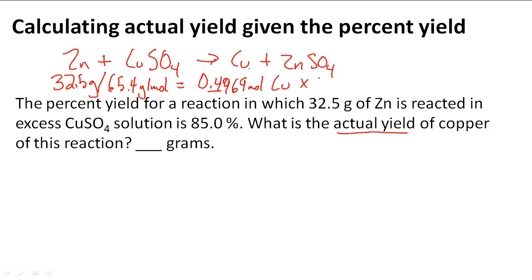To get grams of Cu, we multiply by the molar mass of copper, which is 63.5 grams per mole. When we multiply that, we find that 31.6 grams of Cu is theoretically yielded. This is the theoretical yield.